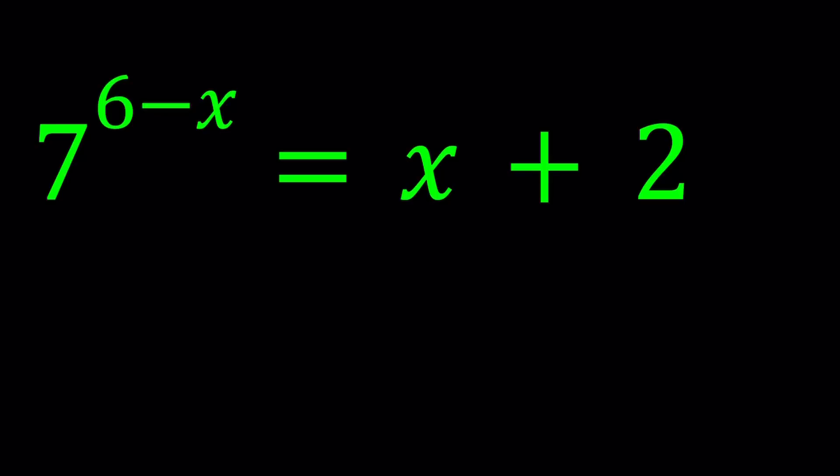So, we have on the left hand side 7 to the power 6 minus x. Now, that is an exponential function, or is it? Exponential functions are basically written like f of x equals a times b to the power x. If b is greater than 1, then we have an increasing function that kind of looks like this. And otherwise, if b is between 0 and 1, then we have a decreasing function, which is kind of like this. They don't all have to follow the same pattern, but pretty much that's what the shape looks like.